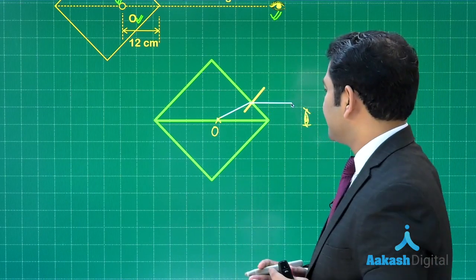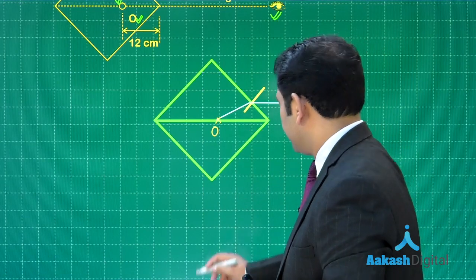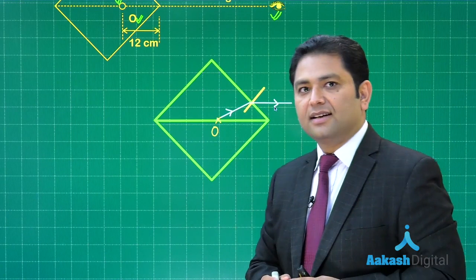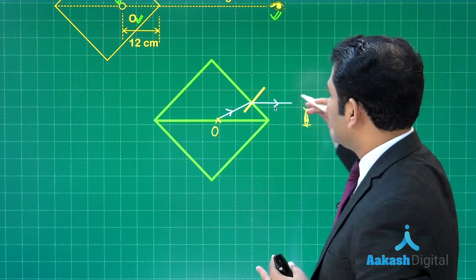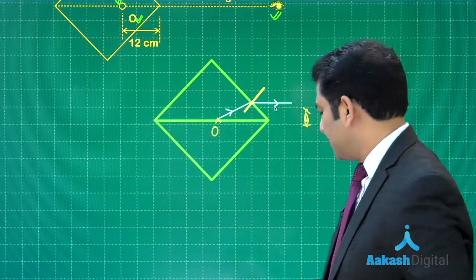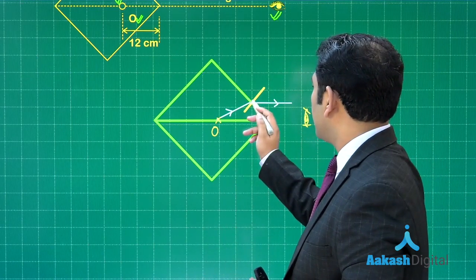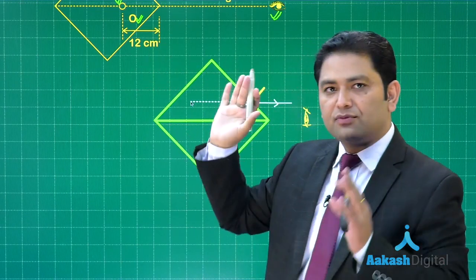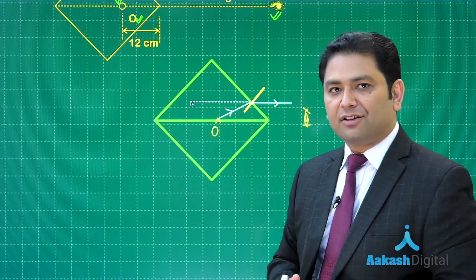Where would the image be? The image would be in a line wherever you extend it by back tracing. I'm not interested in the exact location of the image. Anywhere along this line the image would be there, because this is where the emergent ray goes once it is back traced.